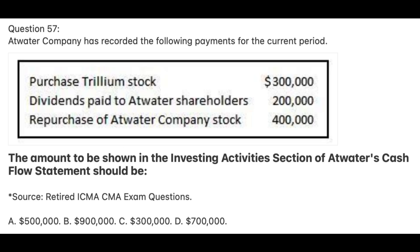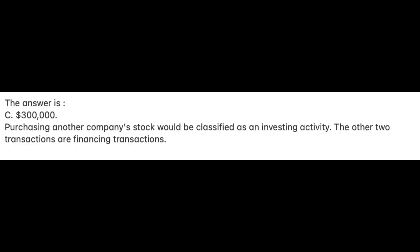Question 57. Atwater Company has recorded the following payments for the current period. The amount to be shown in the investing activities section of Atwater's cash flow statement should be: A. $500,000; B. $900,000; C. $300,000; D. $700,000. The answer is C: $300,000. Purchasing another company's stock would be classified as an investing activity. The other two transactions are financing transactions.